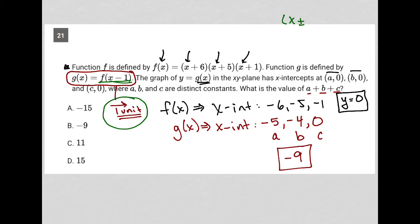Anytime you have a value added into the parentheses along with x, it's going to be a horizontal shift. If the value is positive, you're actually going to shift to the left. If it's negative, you shift to the right.